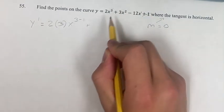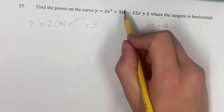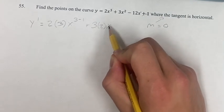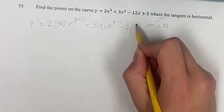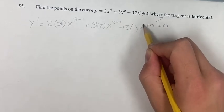Doing that again, take the coefficient, multiply it by the exponent, subtract 1. Finally, coefficient, exponent, subtract 1.